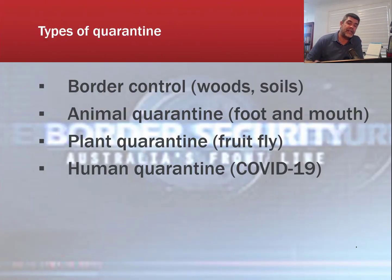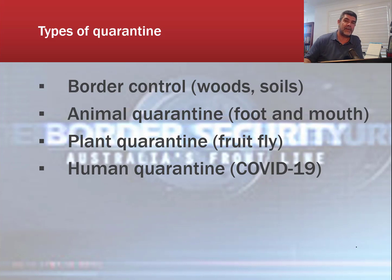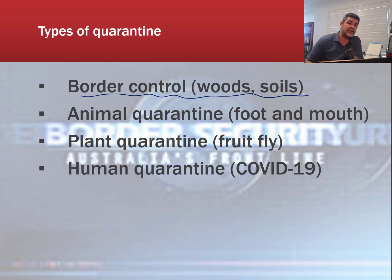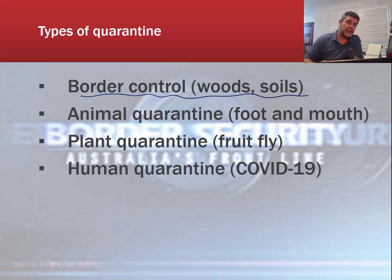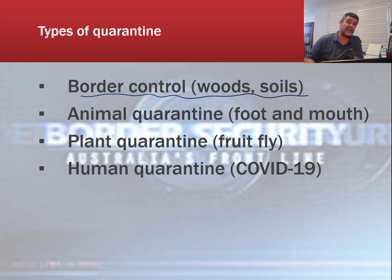There are a couple of different types of quarantine, related to the type of disease or the particular host associated with the disease we're concerned about. Border controls are not just about bringing foodstuffs into the country — they can also involve testing things like your shoes if you've been hiking, golf clubs if you've been playing golf, anything that could carry soils or samples from other countries that may not have been cleaned properly and might harbour pathogens that could take hold unchecked in our country.